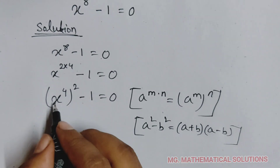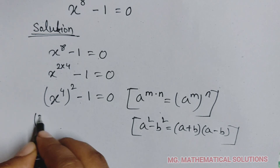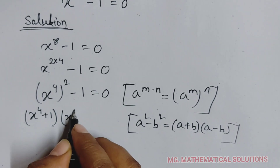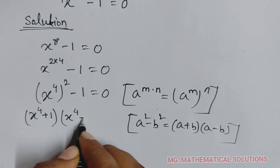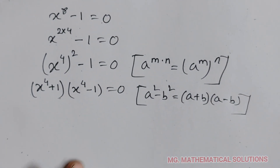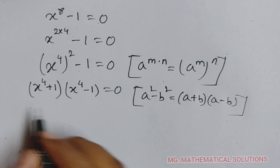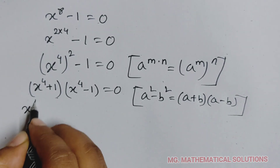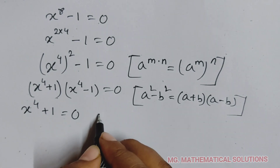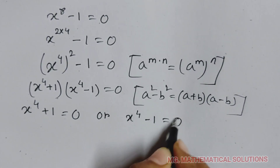Here a equal to x to the power 4 and b equal to 1. So, x to the power 4 plus 1 whole into x to the power 4 minus 1 equal to 0. Either this term equals 0 or this term equals 0. So, x to the power 4 plus 1 equal to 0, or x to the power 4 minus 1 equal to 0.